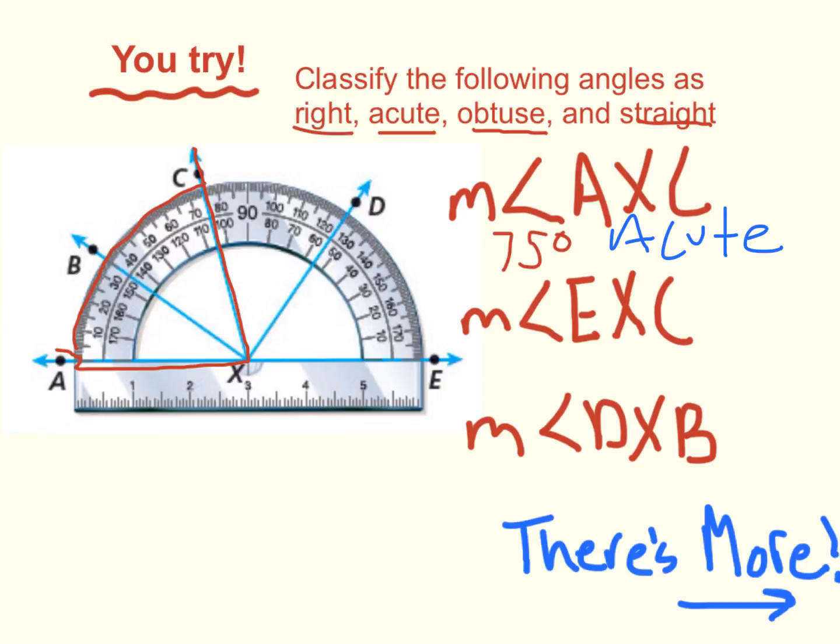In our next angle, we have the measurement of angle EXC. So, we start at ray E, to our vertex X. So, if we count the degrees between E and C, we'll use the inside of the protractor. It's a little easier. And we get 105. Which tells us that our angle is obtuse.